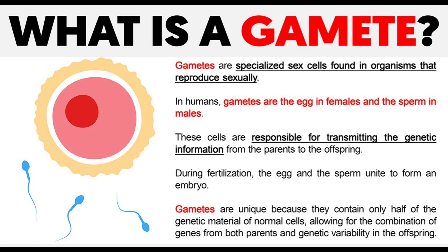We want to understand gametes and how they separate in order to come back together. You can think of gametes like the vehicle that's going to get the traits to the offspring from the parents. The gamete — the vehicle — can only hold one trait. Those two alleles that each parent has, remember they only contribute one because the gamete can only hold one allele.